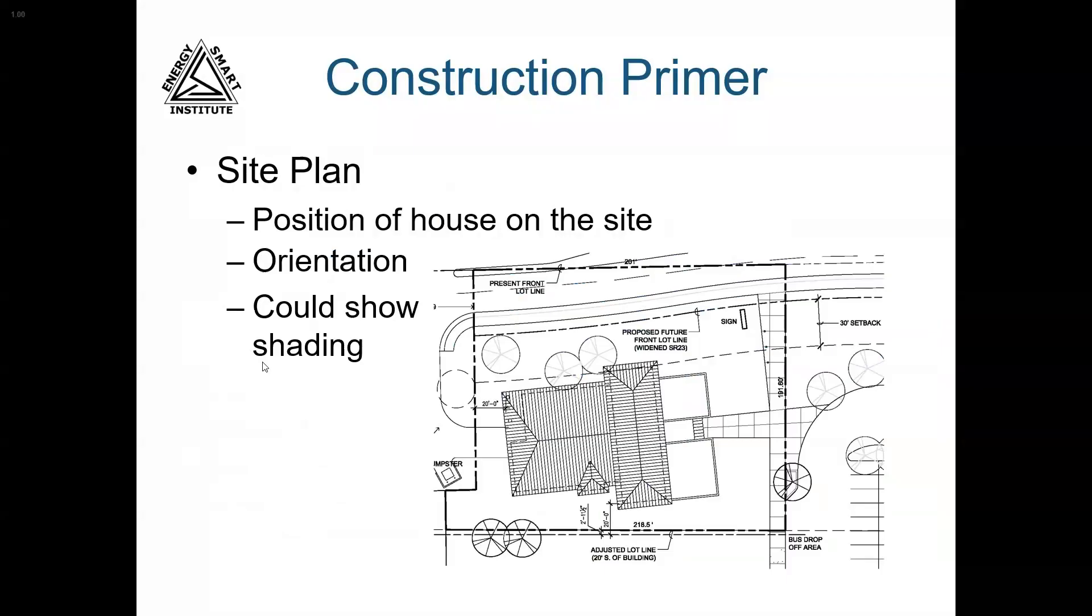A site plan provides a bird's eye view of the house as it will be positioned on the building site. This page of the plans helps you understand the orientation of the house and its windows. The site plan may show trees or other structures that could also provide valuable information about potential window shading. However, be aware that while many times these trees do exist on site, it could also be that they're just on the plan for decorative purposes.